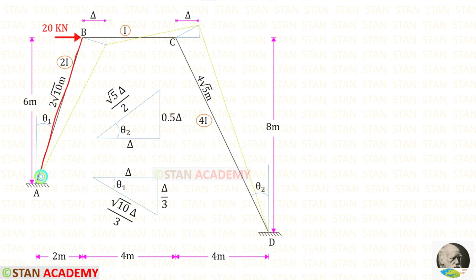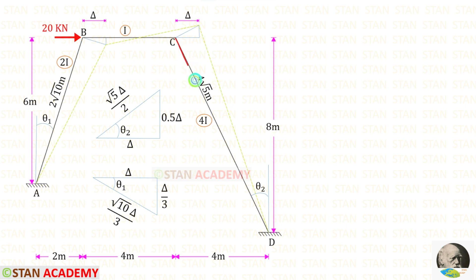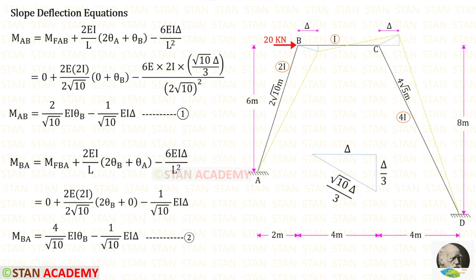For member AB, we have to take this displacement which is root 10 upon 3 delta. We have to add both displacements and we will get 5 delta upon 6. For member CD, we have to take this displacement which is root 5 upon 2 delta.